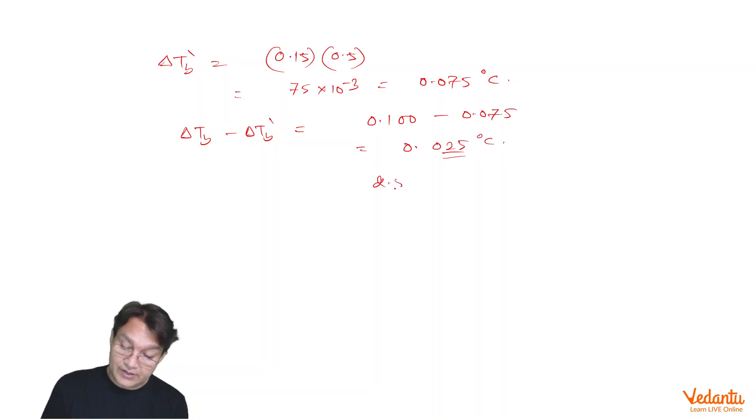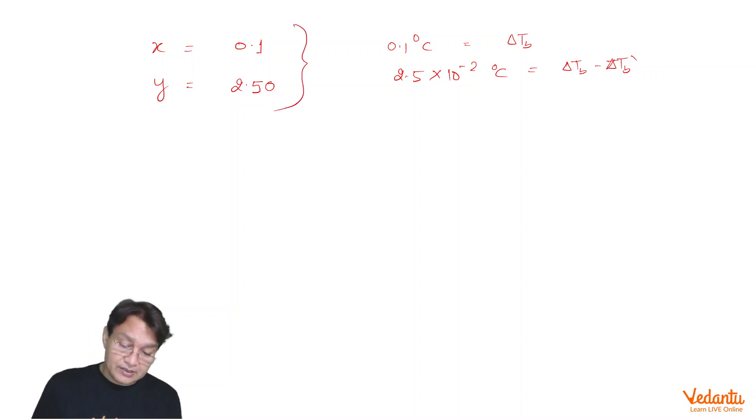which you can write 2.5 into 10 to the power minus 2. In this format, answer has been asked. So, your answer is, in this case, x is equals to 0.1 and y is equals to 2.50.